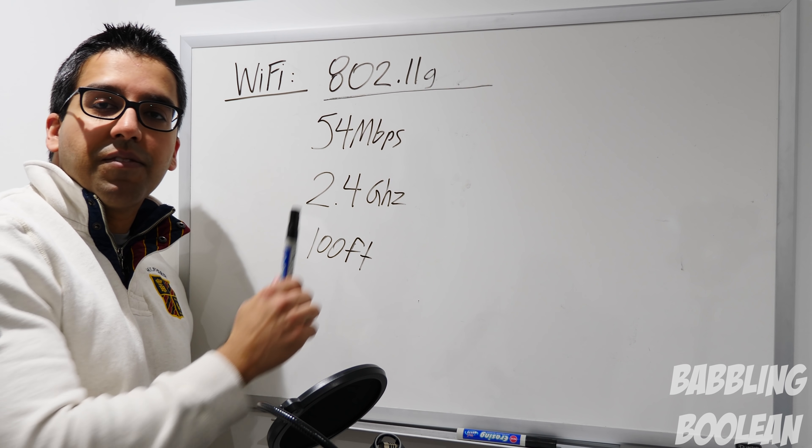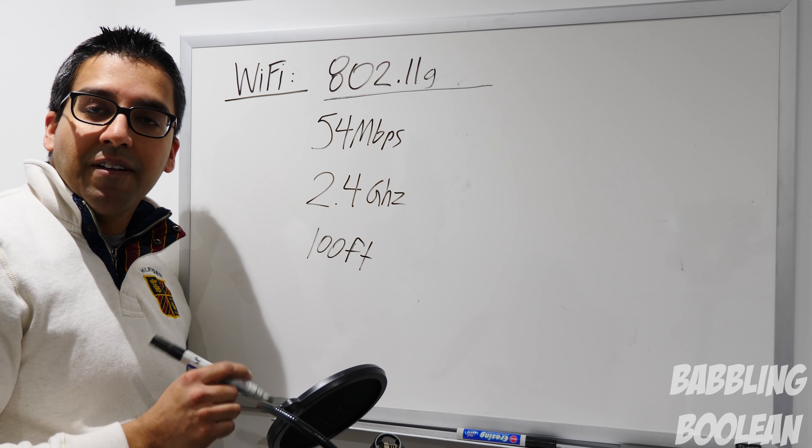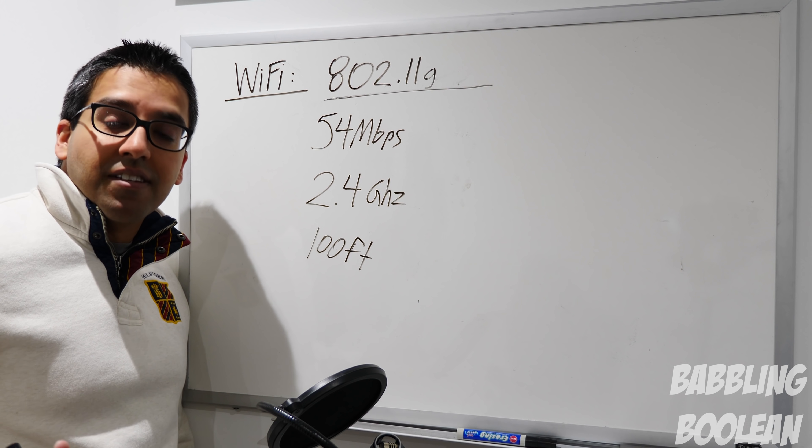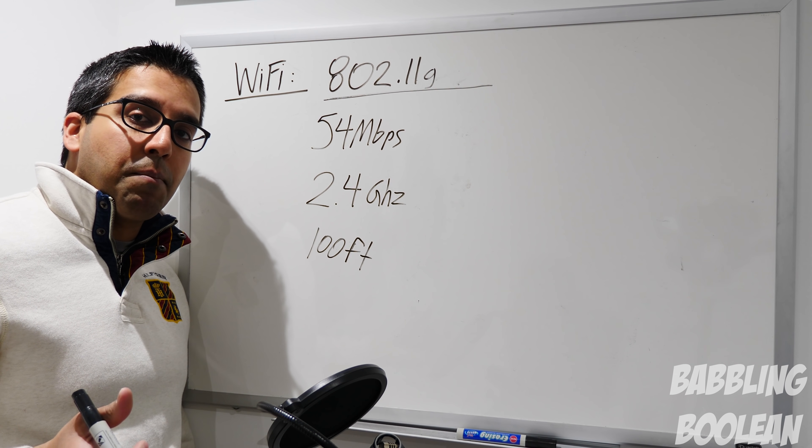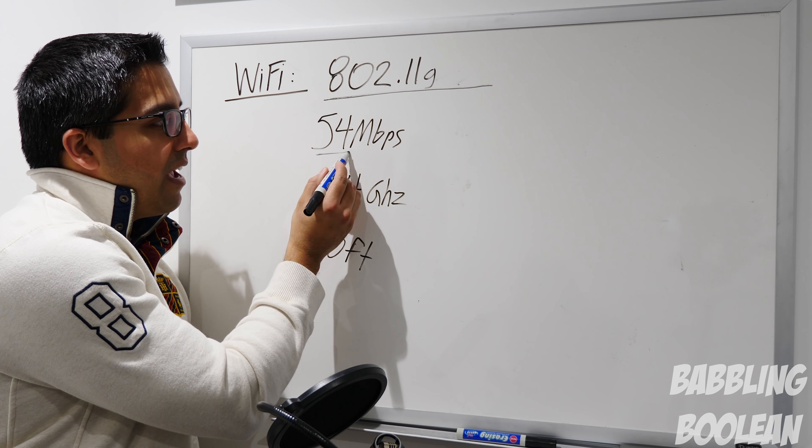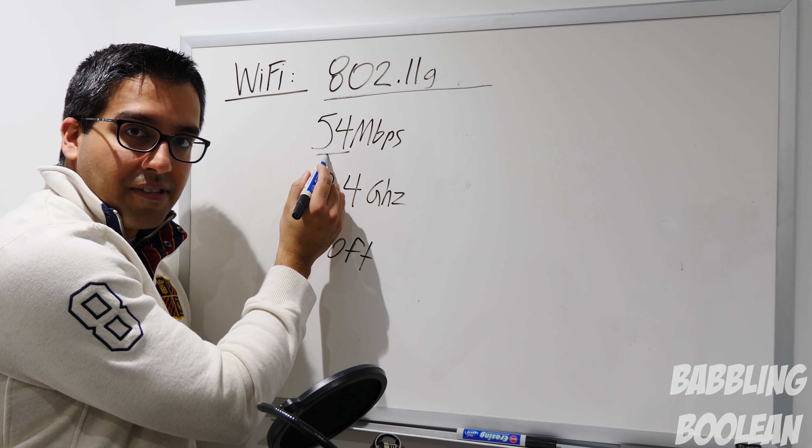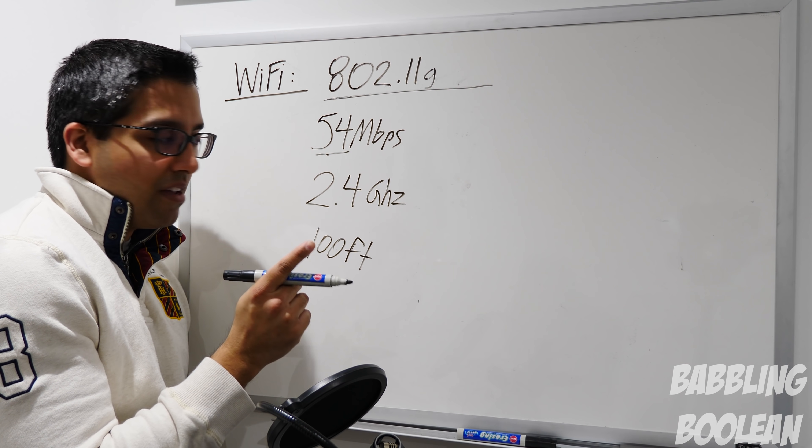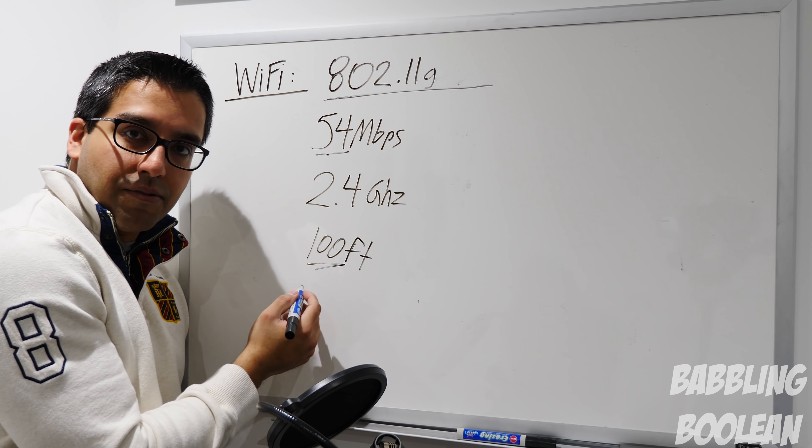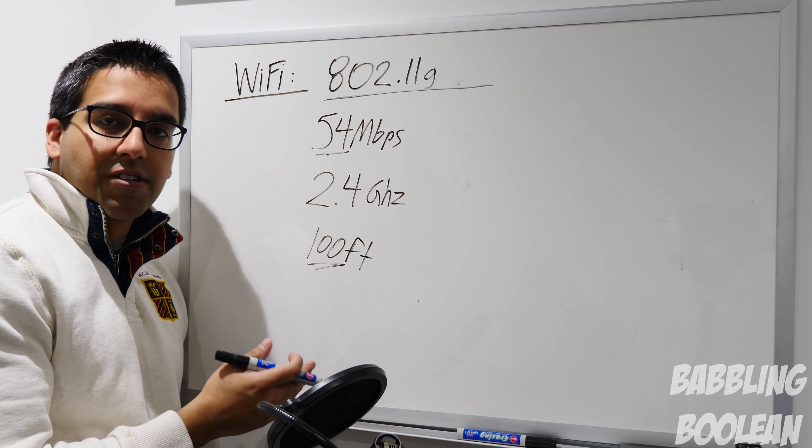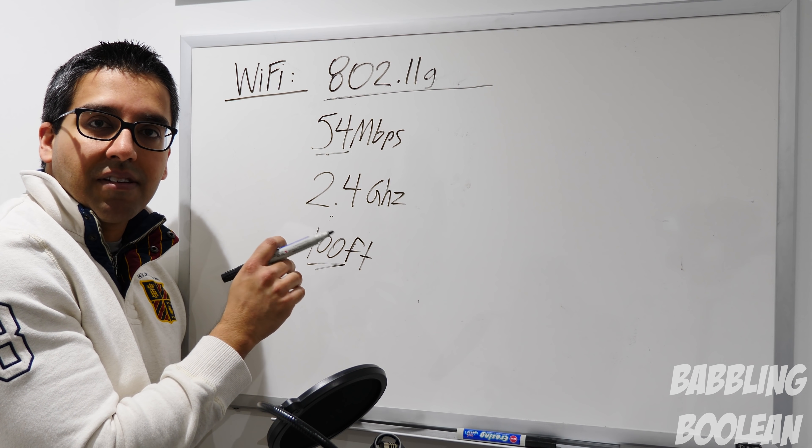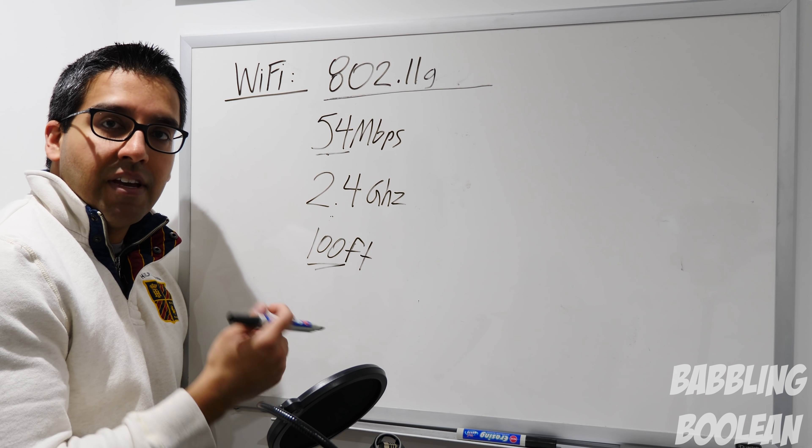Now shifting over to G, in my opinion this is when WiFi got good enough to use that you actually should invest into it if you didn't have a wireless access point back in the day. The reason being is because it had the speed of A at 54 megabits per second, but it had the range of B running on 2.4 gigahertz signal. It was theoretically possible to reach 100 feet of range indoors, but again you most likely have walls and interference from other devices. G was the best of A and B combined.